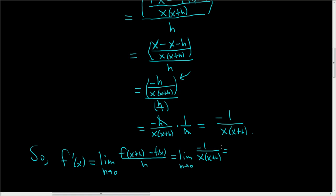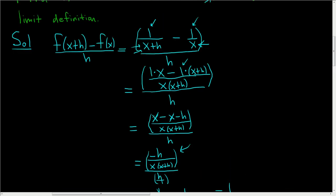And now we can go ahead and plug in 0. So we get negative 1 over x times x plus 0, and so we end up with negative 1 over x squared. And that's the final answer. Now the reason we couldn't take the limit at the beginning is because we had an h on the bottom. So we couldn't just plug in 0 for h because that would be undefined. I hope this helps.